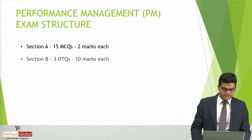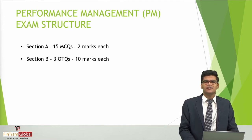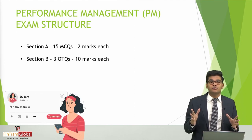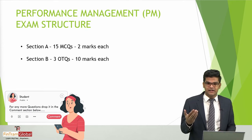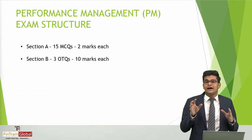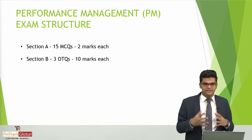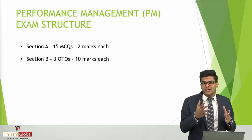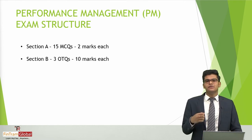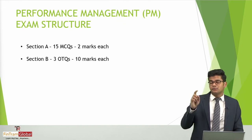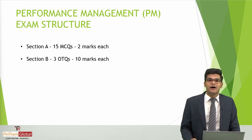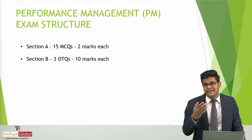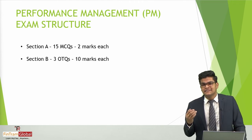Moving on to Section B, we have three OTQs — Objective Test Questions. You will be given a scenario and five MCQs in relation to that scenario. You don't have to write anything; it's multiple choice but in a different format. All five MCQs are related to that particular scenario. Since there are five MCQs per OTQ, one OTQ gives a total of 10 marks, and three OTQs gives us another 30 marks. So Sections A and B together give us a total of 60 marks.